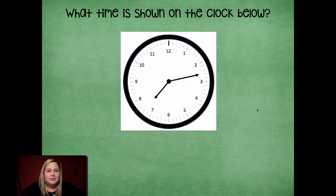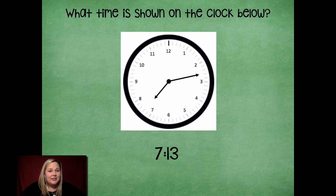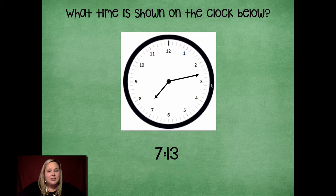Great job, friends. What time are you showing on this clock? Here we go. 7:13. So it's just past the seven because it's a little after seven o'clock. And we look where we can count around. So we would be at 5, 10. Oh, but we're not quite to 15. So we'll have to go 10, 11, 12, 13.